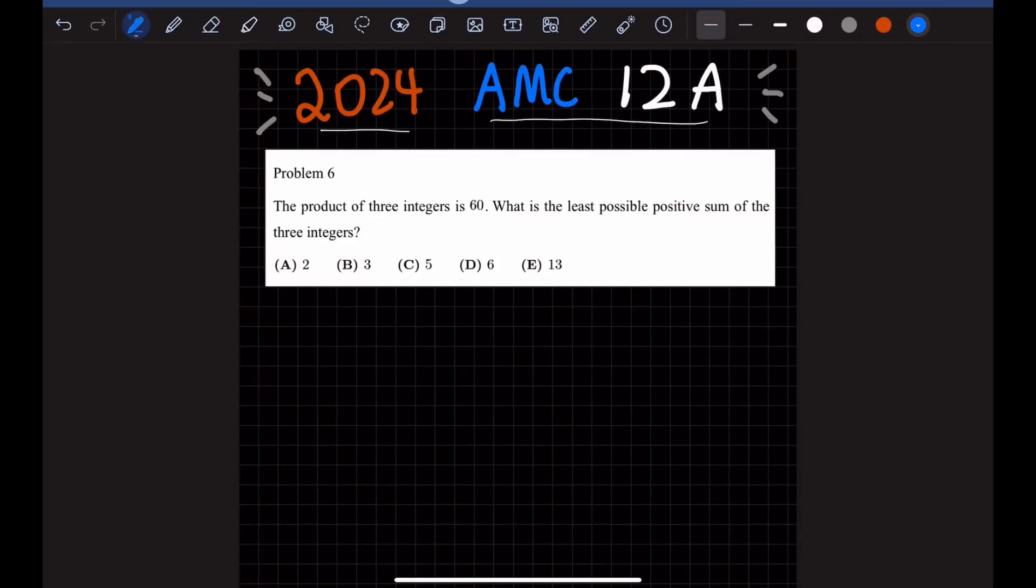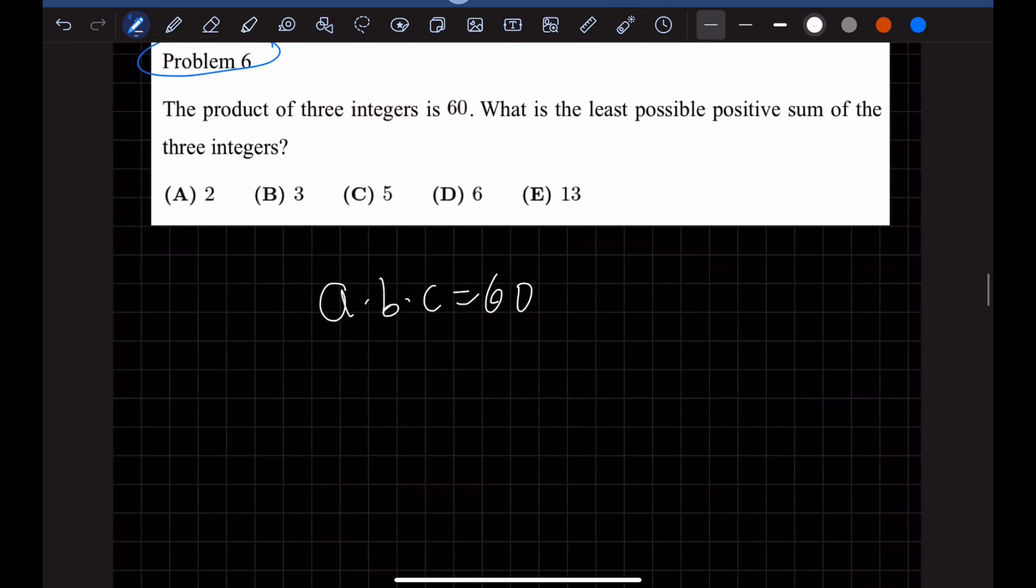Having AMC 12A from 2024, problem number six. The product of three integers is 60. What is the least possible positive sum of the three integers?